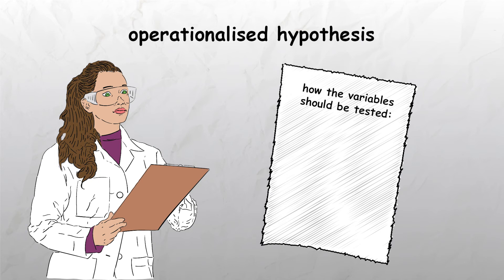This should include all the elements that form part of the experiment's design, including the experimental method, sampling, the independent variable, for example what groups the participants will be put into, and the dependent variable, the thing researchers want to measure.